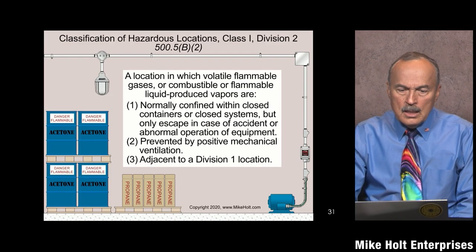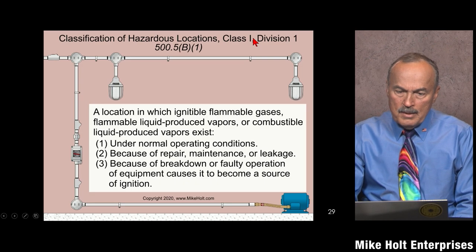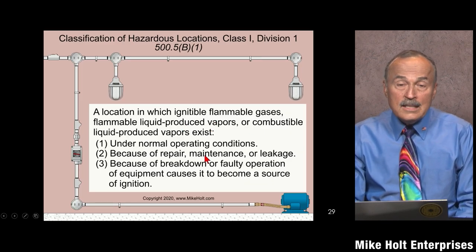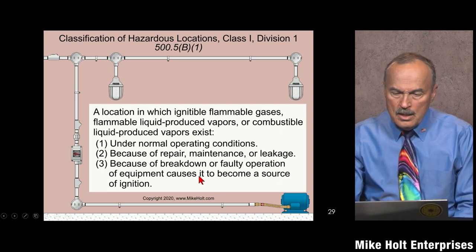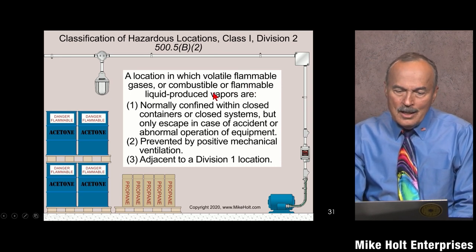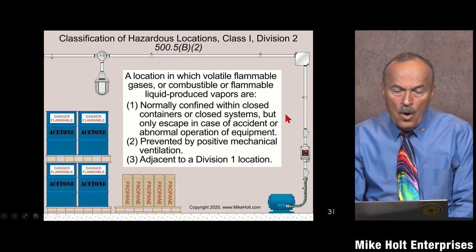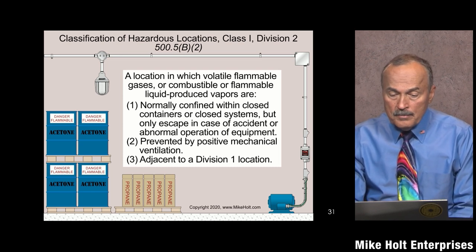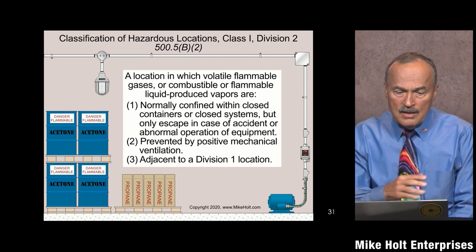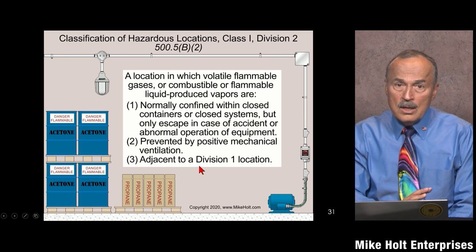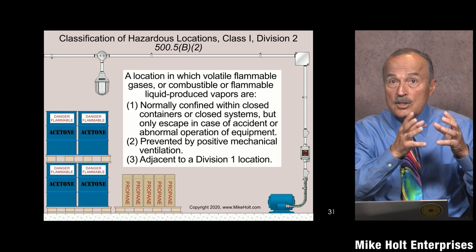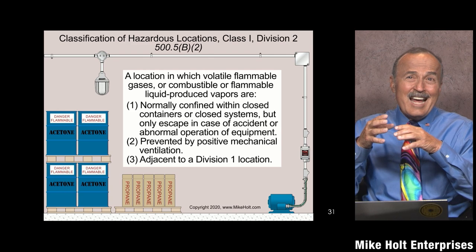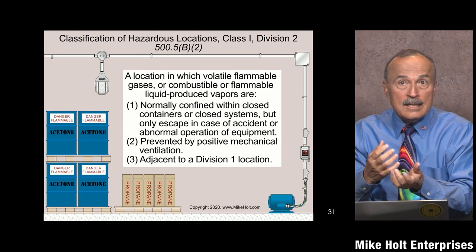Class 1 Division 1 is about gases being present under normal operating conditions — repair, maintenance, leakage, or failure. Class 1 Division 2 is where the gas is normally confined within closed containers or closed systems, but only escapes in case of an accident or abnormal operation, or where ventilation mitigates exposure, or it's adjacent to a Class 1 Division 1 location transitioning to a non-classified area.